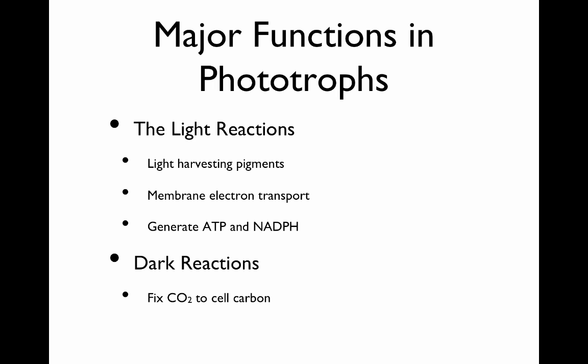The major functions in phototrophs have two different parts. There are the light reactions, where the light harvesting pigments help to collect light, which generates ATP and also NADH. The dark reactions actually fix CO2 into cell carbon.